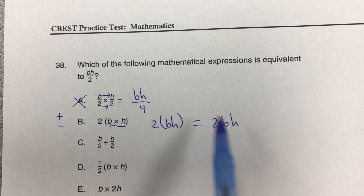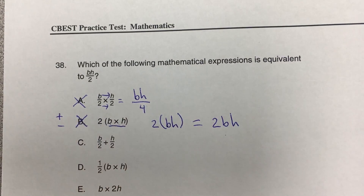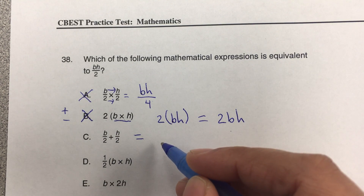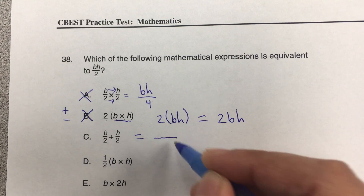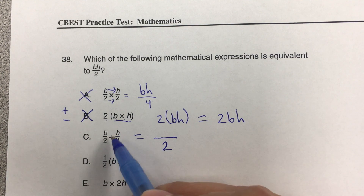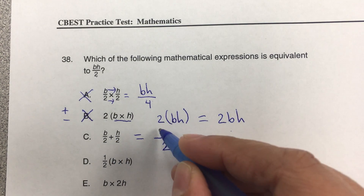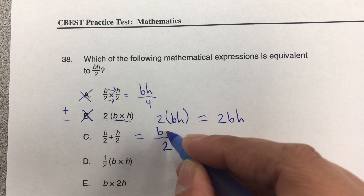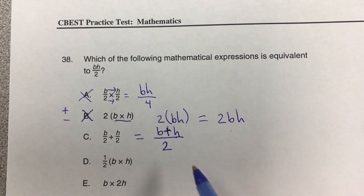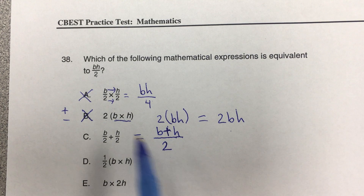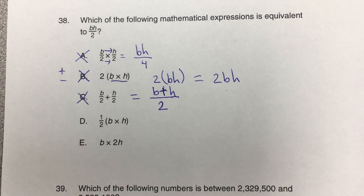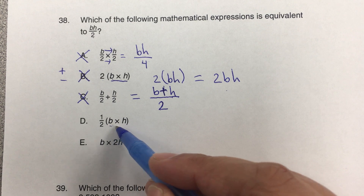2bh does not look like what they gave us, so it's not equivalent — that expression is division, this is multiplication. Letter B is not correct. For letter C, when we have a common denominator, meaning both denominators are the same, we can write it only one time. However, when we have a plus or minus, we have to write both numerators with that symbol. So b plus h over 2 is not the same as b times h over 2. Letter C is not correct.